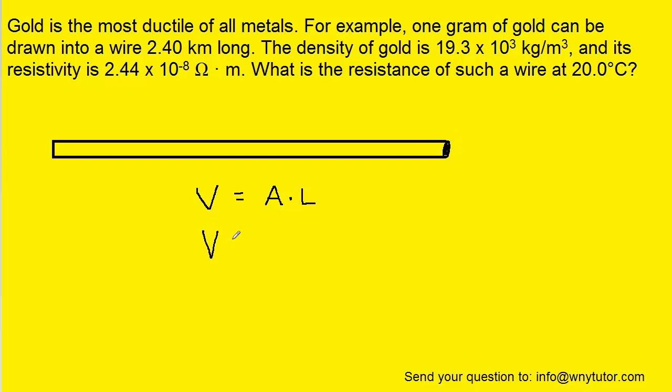Now, we also know that volume is equal to mass divided by density. So we can set this expression for volume equal to this expression for volume. Then we can solve this equation for that cross-sectional area, and to do that we'll divide both sides of the equation by the length. So we now have a nice tidy equation for the cross-sectional area of the wire in terms of its mass, density, and length.